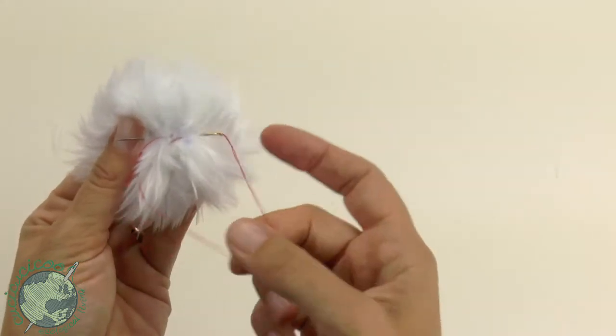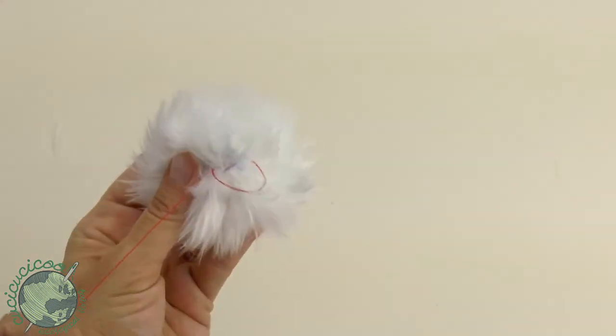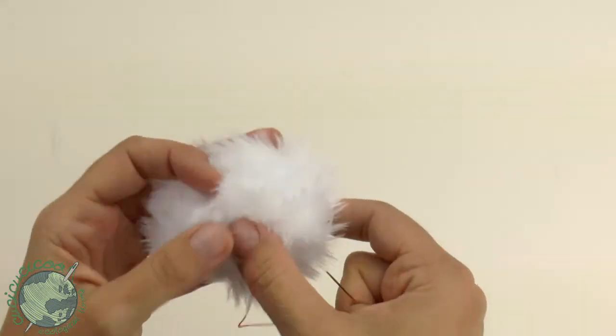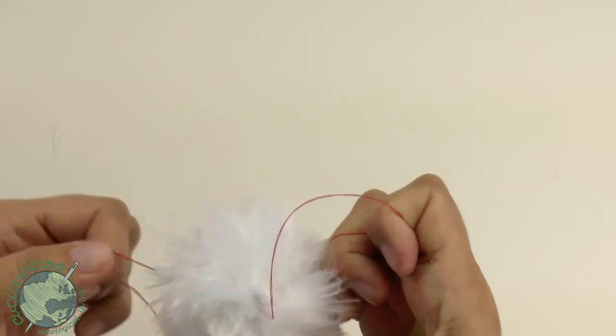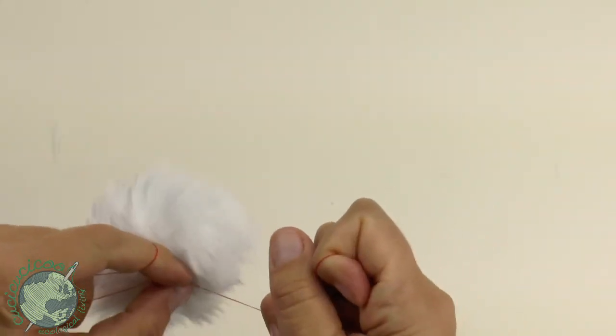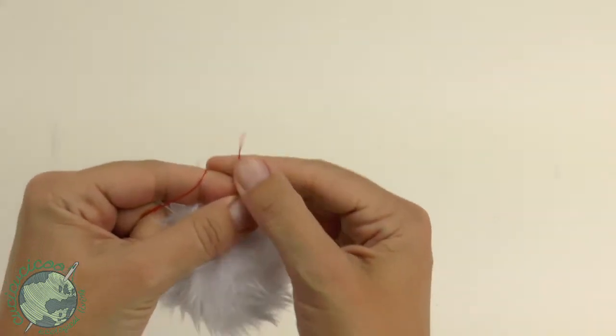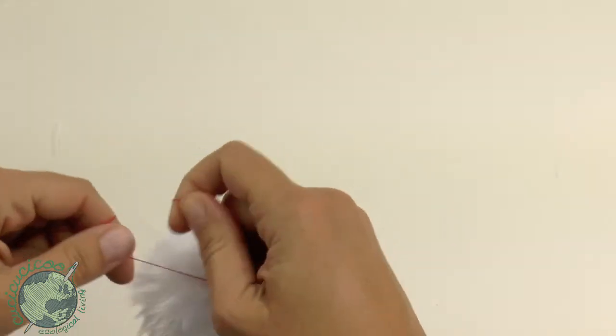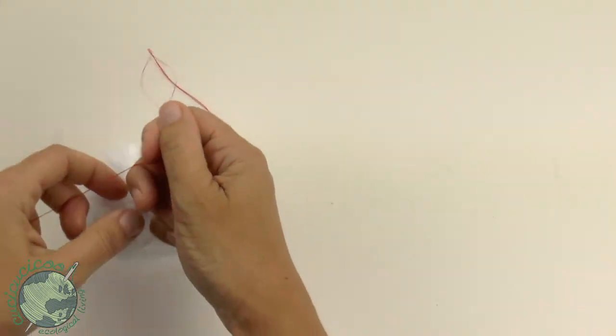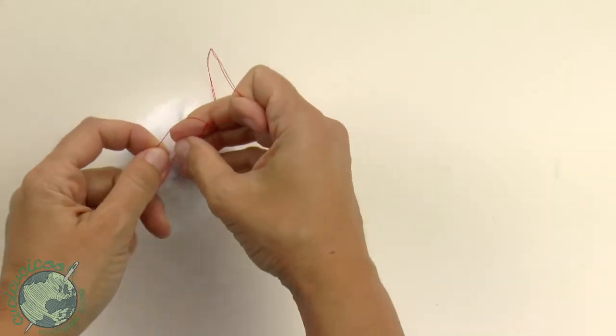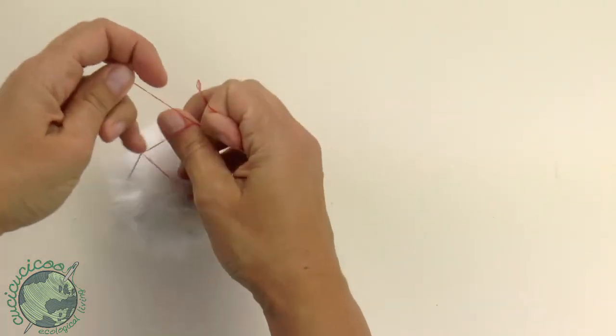There we go. Pull it through and there we go. Now it's pulled nice and tight now. So again I still have my two threads here and I'm going to knot again. I'm going to do another double knot. At this point though it's easier to hold it together. I'm just going to put it down on my surface and tie another double knot.